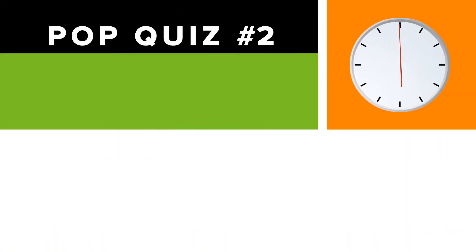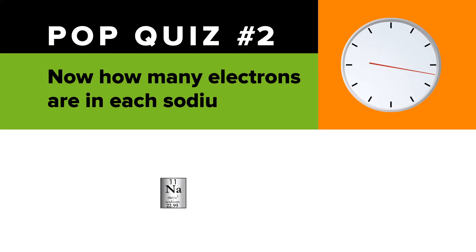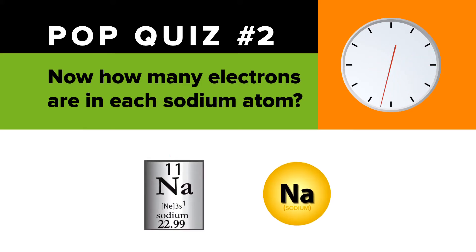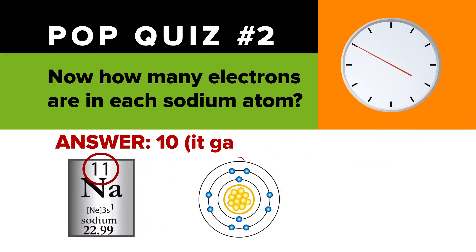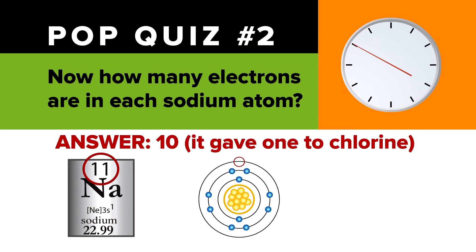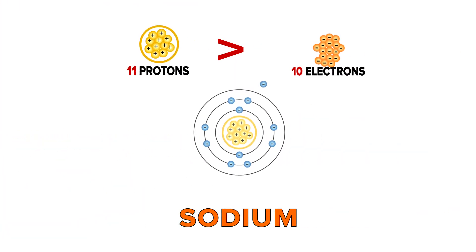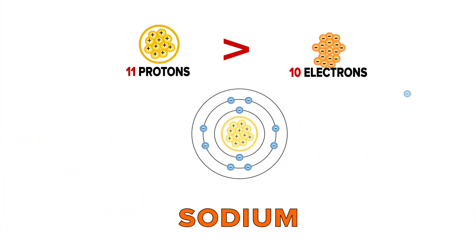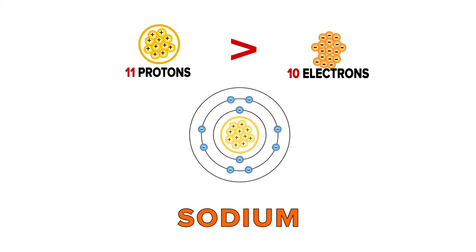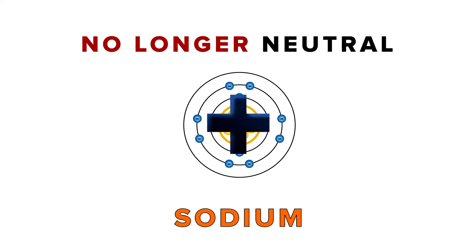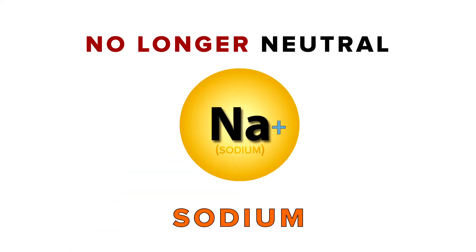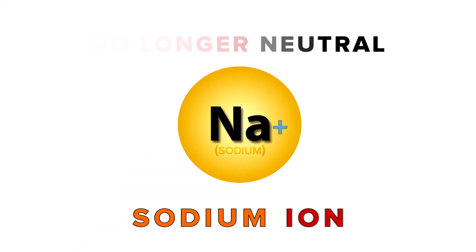Pop quiz number two. Now, how many electrons are in each sodium atom? To remind you, this is sodium's atomic number. Answer, 10, because it gave one of its 11 electrons to chlorine. The positive protons in the atom now outnumber the negative electrons, 11 to 10. So sodium is no longer neutral. It now has a positive charge, indicated with a plus sign, and is a sodium ion.